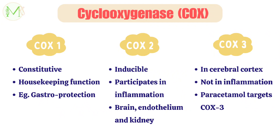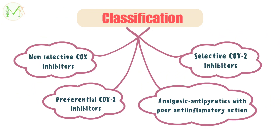So which NSAIDs inhibit which type of COX? Based on this question, NSAIDs have been classified as: non-selective COX inhibitors, preferential COX-2 inhibitors, selective COX-2 inhibitors, and analgesics/antipyretics with poor anti-inflammatory action.